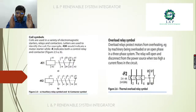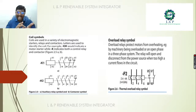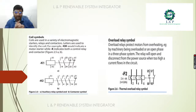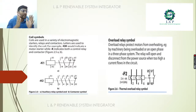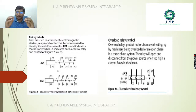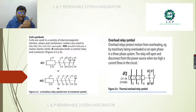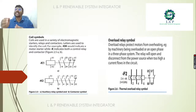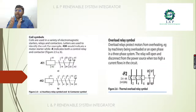For coil symbols, we mostly represent coils with either KM or K followed by a numerical number. Equipment operating through electromagnetic processes falls into the coil category — examples include starters, relays, and contactors, which all come under coil symbols.